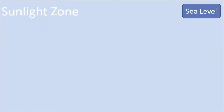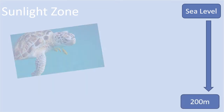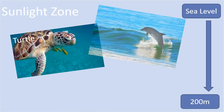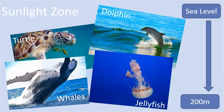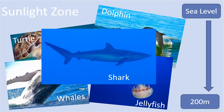The sunlight zone begins at sea level and goes down to a depth of 200 metres. Animals such as the sea turtle, dolphin, whales, jellyfish, and sharks live in the sunlight zone. As this is where most plants grow, it follows that this is also where most sea animals live. There is plenty of sunlight and plenty of food.